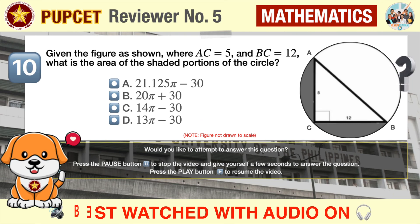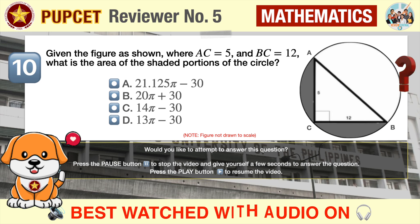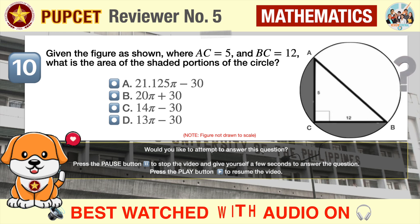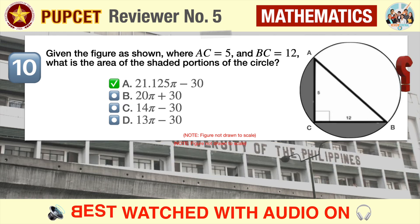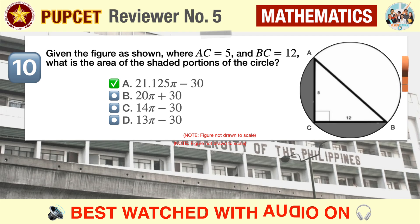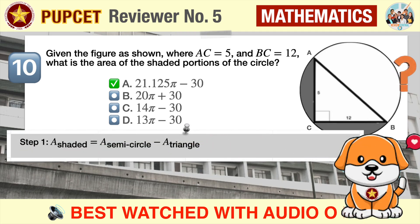Question number ten: given the figure shown where AC equals 5 and BC equals 12, what is the area of the shaded portions of the circle? A) 21.125π minus 30, B) 20π plus 30, C) 14π minus 30, D) 13π minus 30.